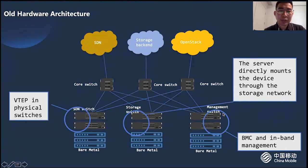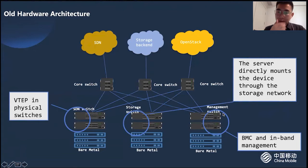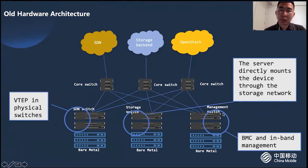As mentioned, our first stage of hardware architecture is built based on an open source compute solution. The bare metal computing, storage, and network services are all dependent on hardware, and the server is only for automatic management control. Here are a few points we'd like to share. First, the OVS network falls on the bare metal. Using this, the SDN can control the switch to configure the network directly. It does a good job, but the functions from the hardware are still too weak.